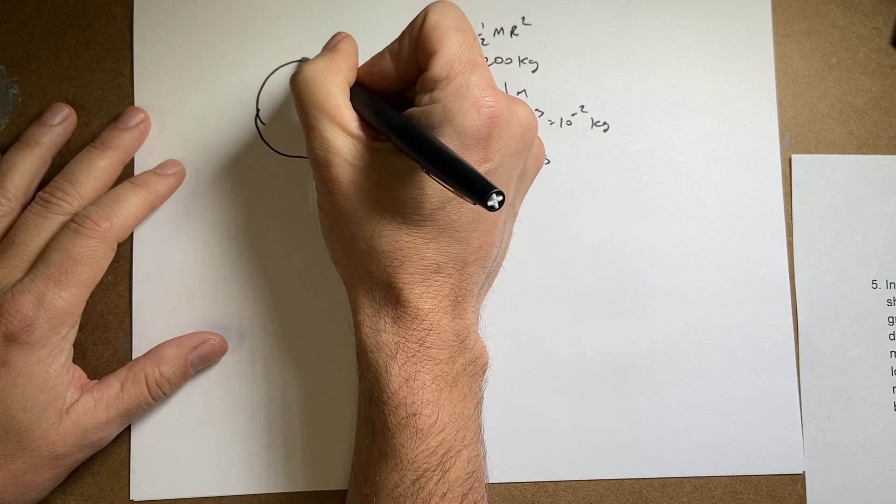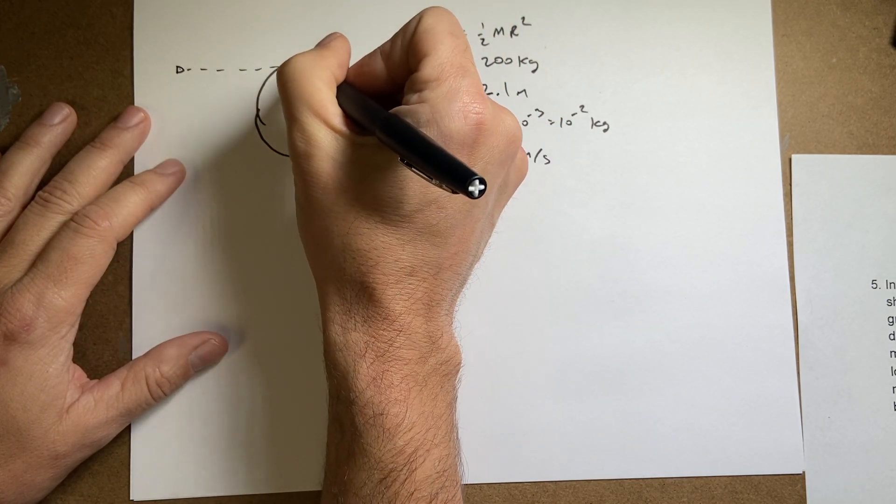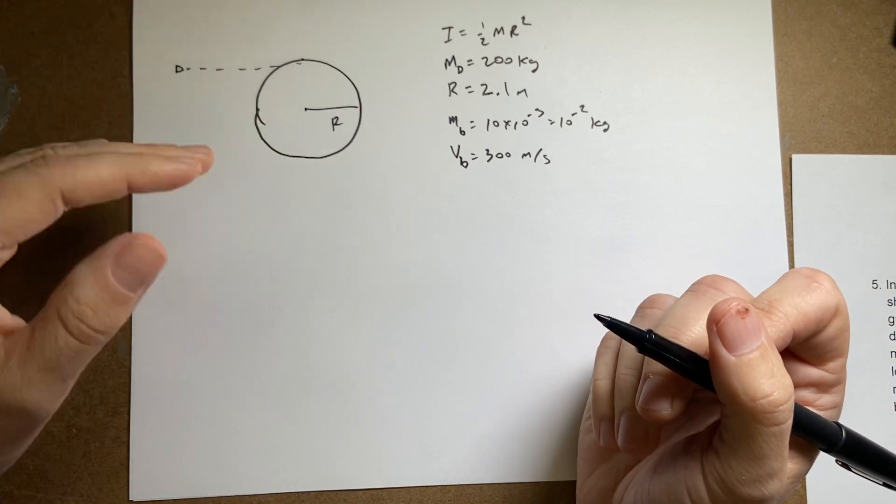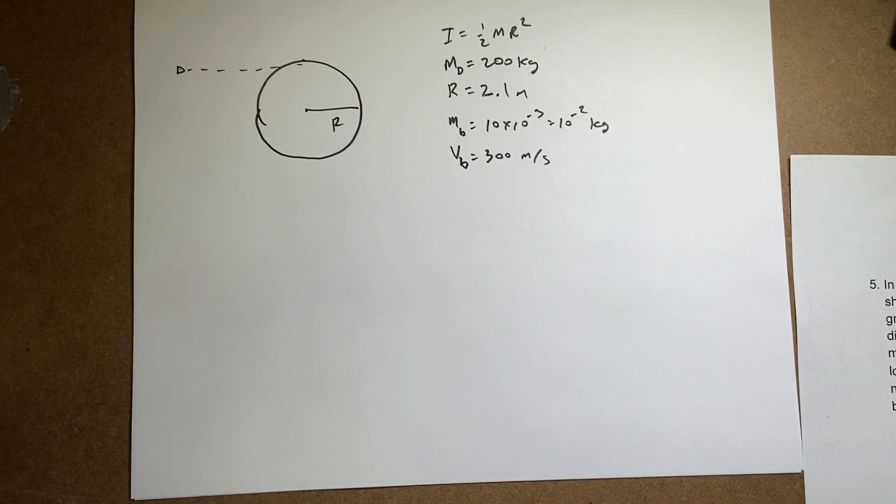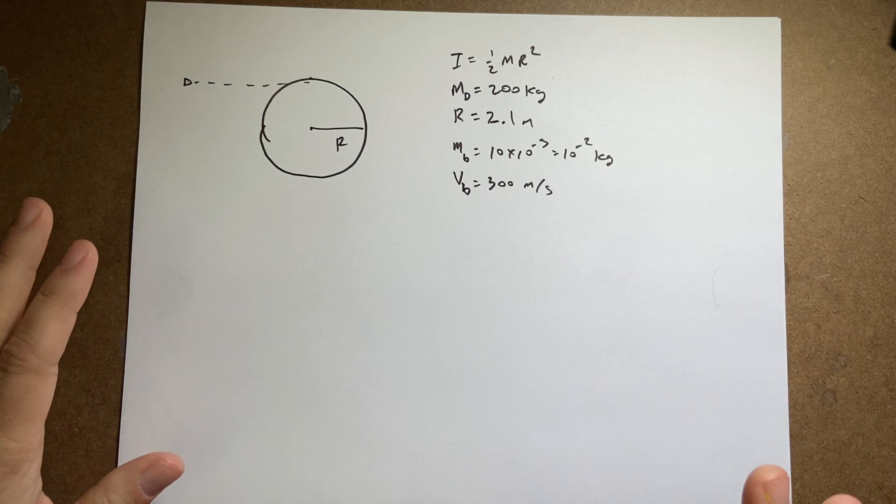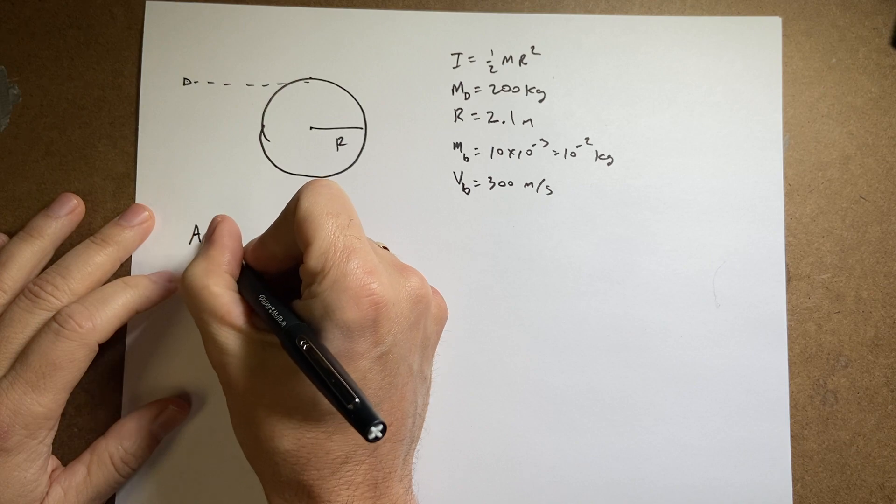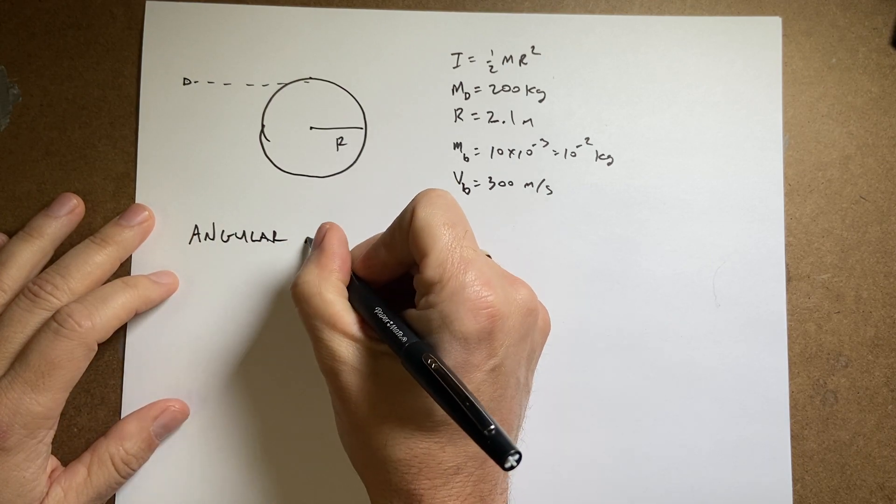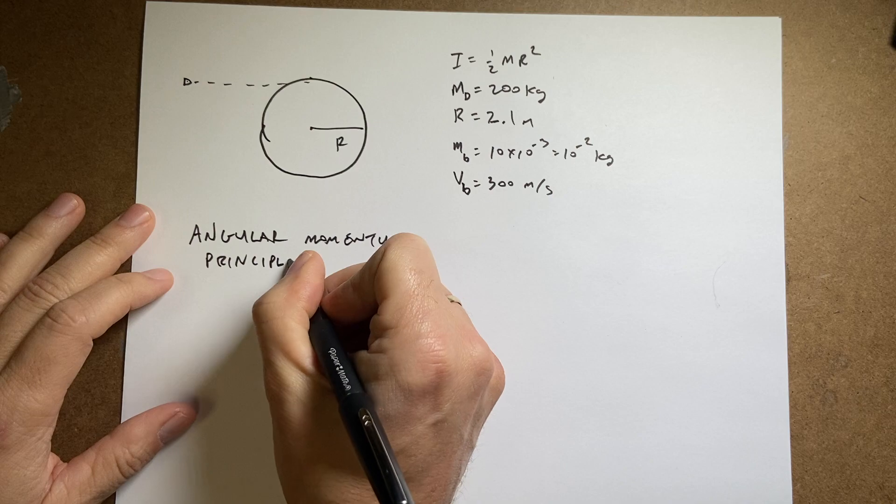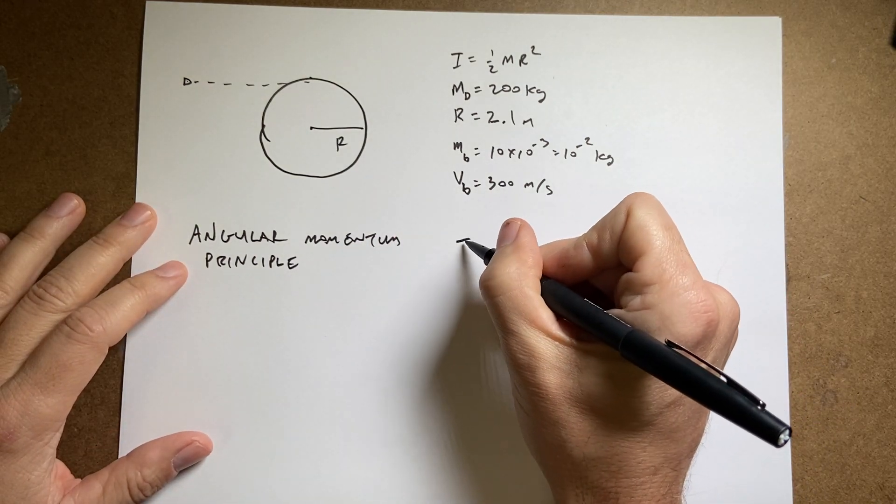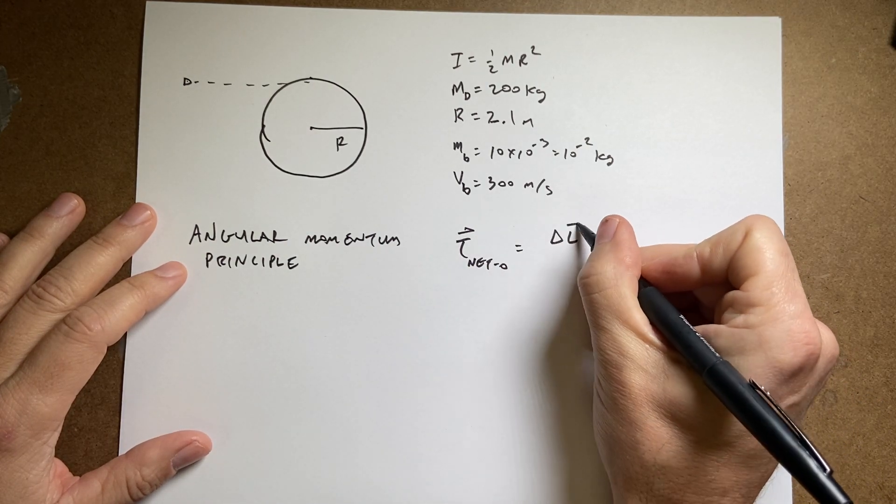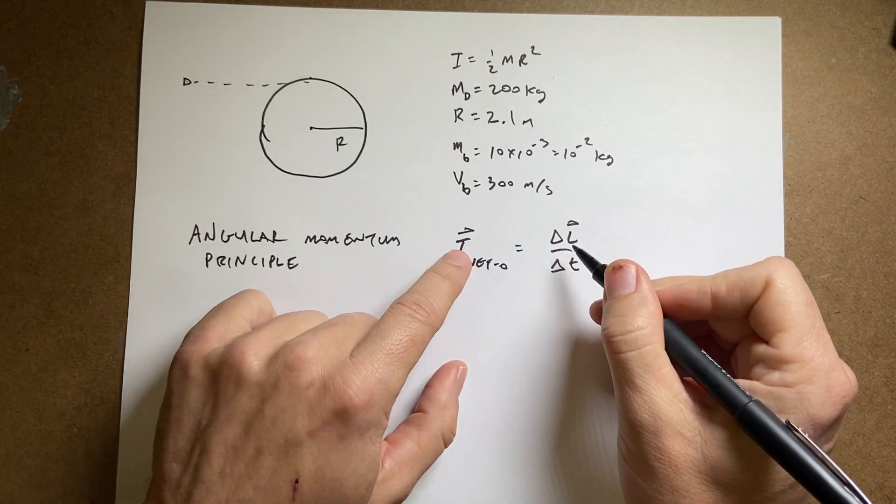So I want to take this bullet and hit it right here on the corner. That's going to be the best possible location to hit that. Imagine if you hit it right at the center, it's not going to make it rotate at all. The further away you hit it, the better it's going to be. But what's the big idea? What's the main principle in this problem? It's the angular momentum principle.